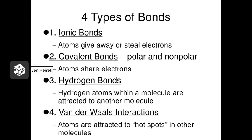To meet the octet rule, atoms are going to make bonds with one another and interact. There are four different types of bonds we're going to go over in this lecture, and we'll take them one at a time.